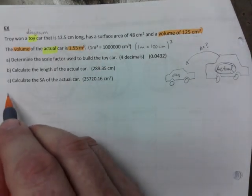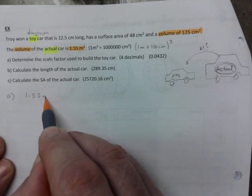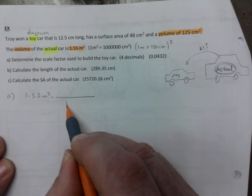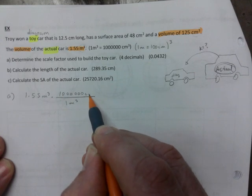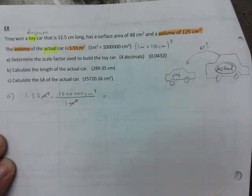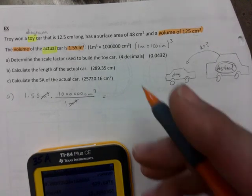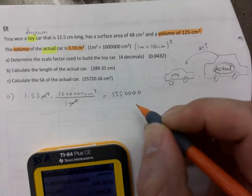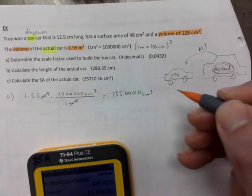For part a, to get the scale factor, first and foremost I will do the conversion. I keep that many cubic meters, I know that one cubic meter has one million centimeters cubed. That cancels out, multiply that out, and you should get 155,550,000 cubic centimeters.